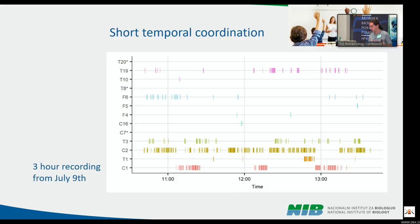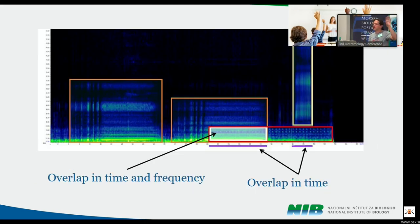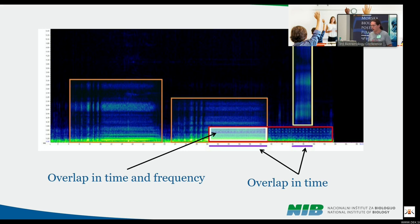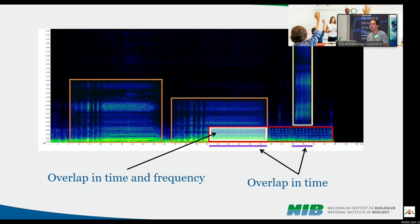For short temporal coordination, we looked at three hours of recording from July 9th, covering 13 different vibrational types. We annotated all vibrational events by determining low and high frequency and start and end time, then calculated the area of overlap — either in time and frequency, or just in time. To compare, we randomly distributed the same number of vibrational events in the same time period, repeating this a thousand times to gain statistical power.